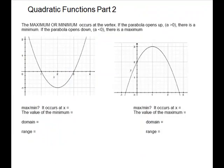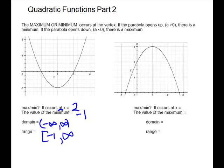Next we'll look at maximum or minimum, which occurs at the vertex. If the parabola opens up it has a minimum — your lowest point. If it opens down, it has a maximum — your highest point. Where it occurs uses the x-coordinate, and the value uses the y-coordinate. So for this example, the minimum occurs at x = 2 and the value is −1. Domain is negative infinity to positive infinity, and the range from the lowest point (the y-coordinate) is [−1, ∞).